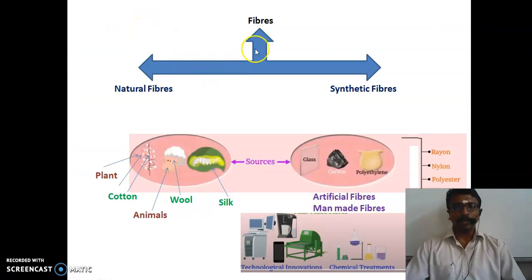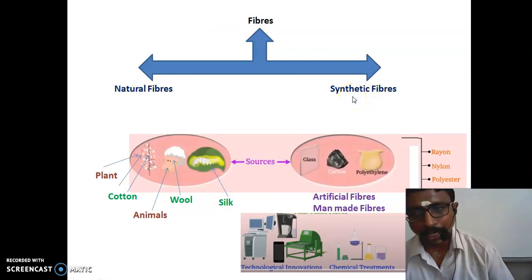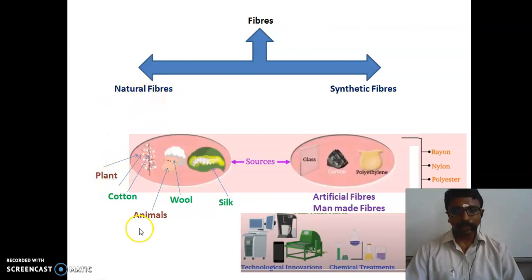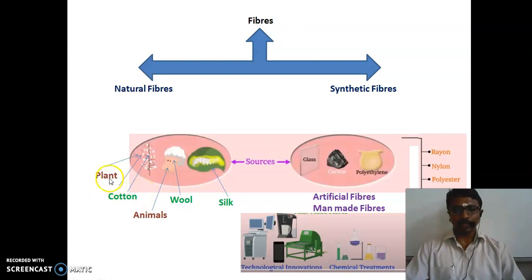Now we can recapitulate the first session. Fibers are of two major types: natural fibers and synthetic fibers. Synthetic fibers are also called man-made fibers or artificial fibers. Natural fibers are obtained from plants and animals — examples include cotton from plants, and wool and silk from animals.